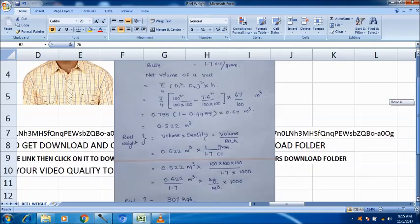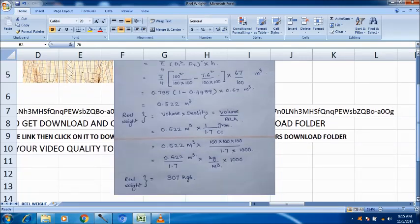Now, to convert cc into meter cube, because it is in cc in denominator, we have to convert m cube to that, we have to multiply with 100 into 100 into 100 to convert the m cube.